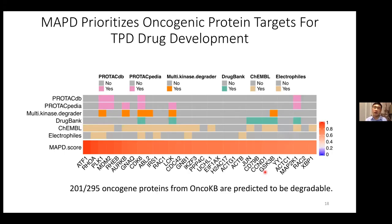Given the model's generalizability, we extended predictions to oncogene proteins downloaded from the ONCOKB database and identified more than 200 oncogene proteins as degradable. Among the top degradable oncogene proteins, we identified PLK1, MDM2, and CDK6, which already have publicly available PROTAC molecules. We also identified novel targets such as ATF1, RHOA, and ABO2, which have available small molecule ligands recorded in the ChEMBL database. These ligands could serve as starting points for future protein degrader development.